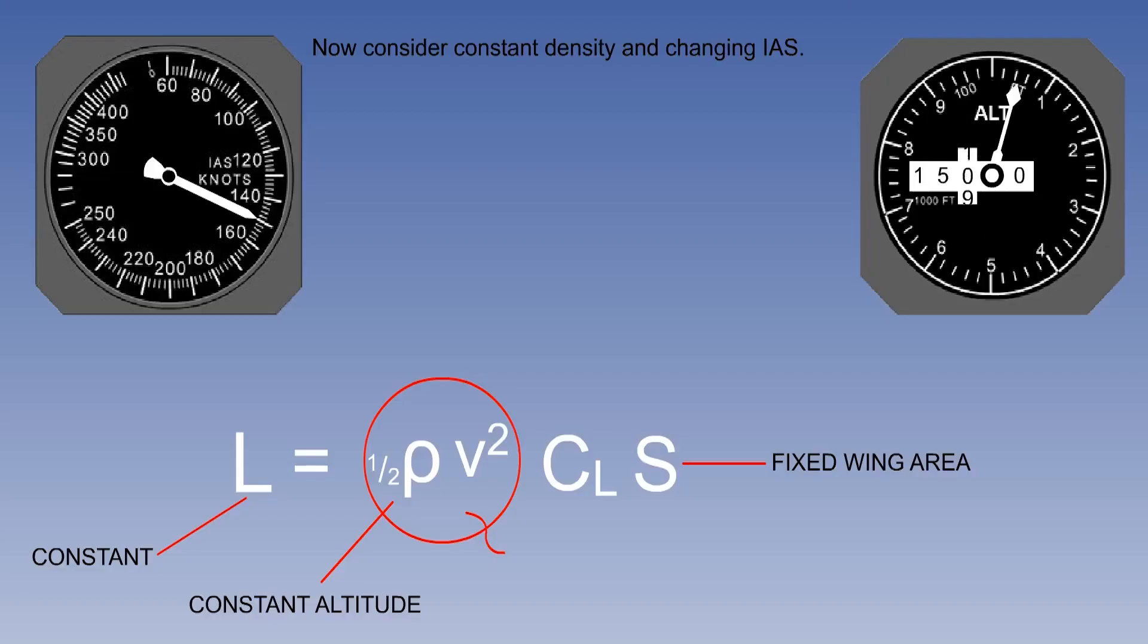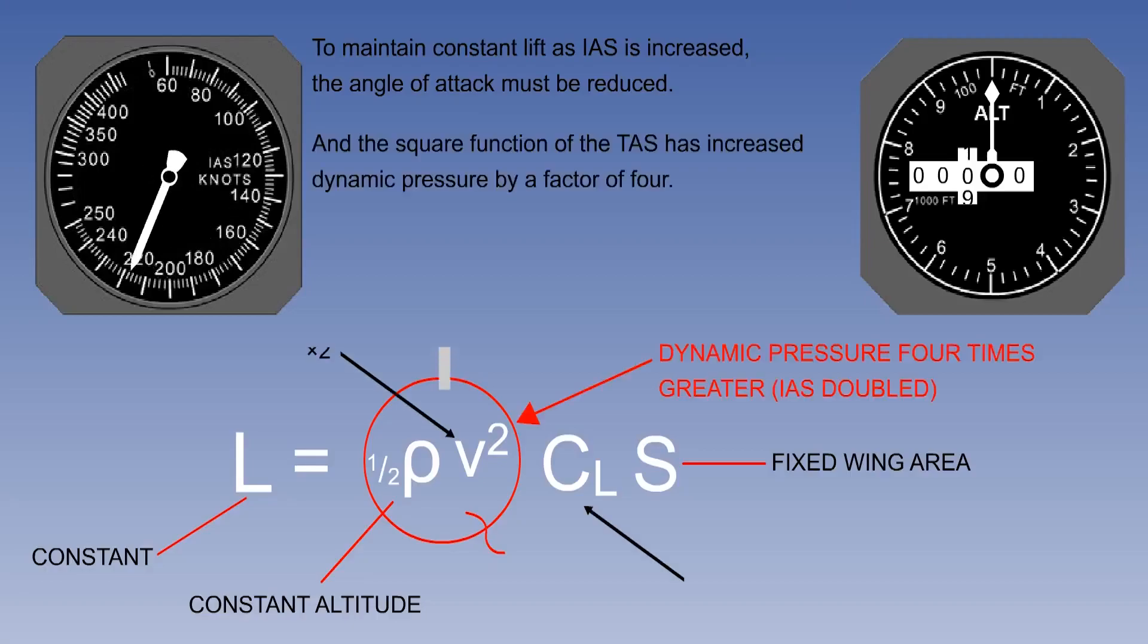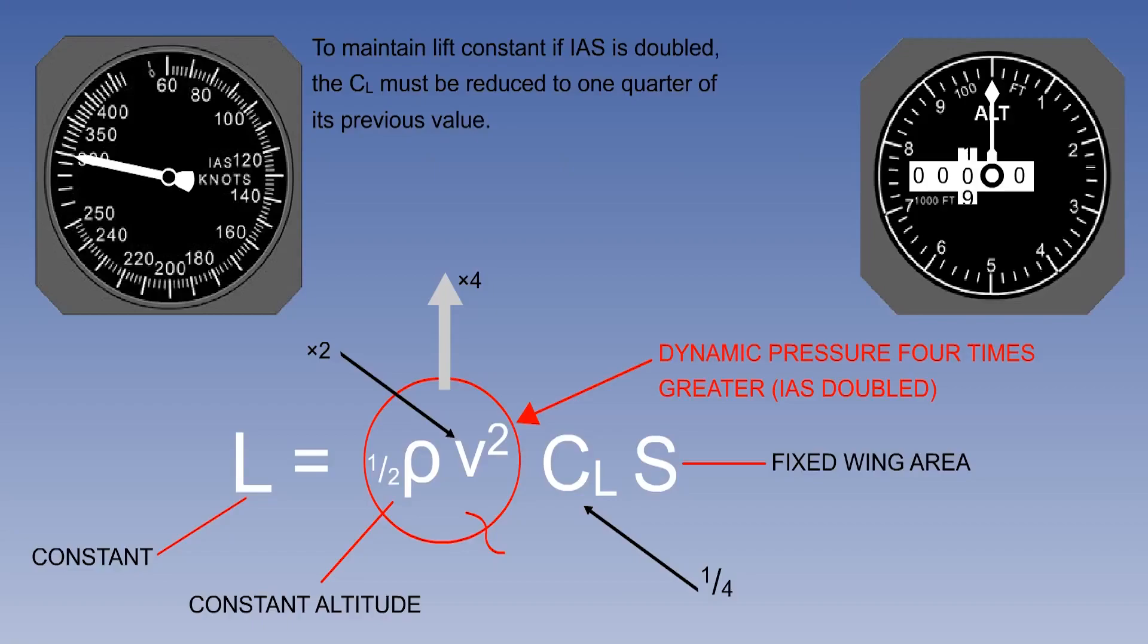The lift formula can also be used to look at the relationship between speed and angle of attack at a constant altitude. As before, if one element of the equation is increased, another must be reduced. As speed rises, the CL must be reduced to maintain the same total lift, normally by reducing the angle of attack. If indicated airspeed is doubled, here from 150 knots to 300, the TAS also doubles, increasing dynamic pressure by 4. If dynamic pressure is increasing by a factor of 4, then to maintain lift at a constant, the CL must be reduced by the same factor, in other words to a quarter of its previous value, by reducing the angle of attack appropriately to keep the aircraft at a constant height.